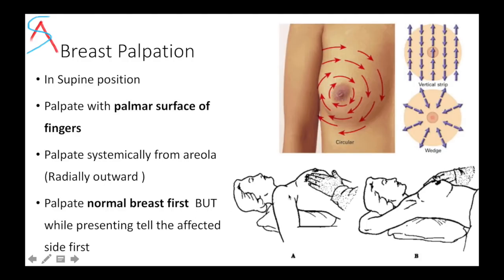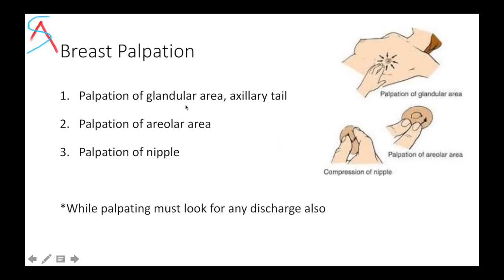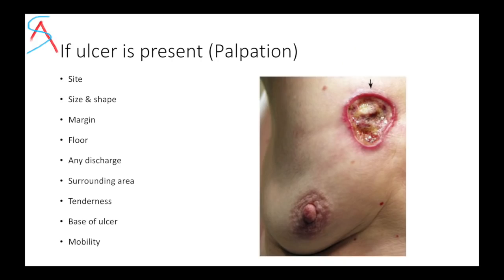Remember to palpate the normal breast first, but while presenting you can tell the affected side first. In breast palpation, make sure to palpate the glandular area and do not miss the axillary tail — in inspection also do not miss it. Then palpate the areola area and nipple, looking for any discharge from the nipple while palpating. If any ulcer was seen during inspection, on palpation describe its size, shape, margin, floor, any discharge, surrounding areas, tenderness, base of ulcer, and its mobility.